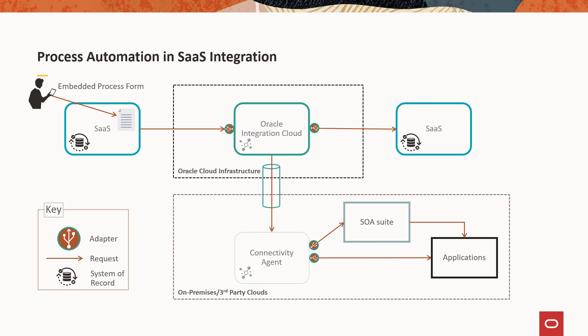An important architectural point: when extending applications, we generally do not want to create a separate database with application data in it. We want to use integration to pull and push data into existing systems of record rather than creating new systems of record. Keep the data with who owns it — don't create new databases.